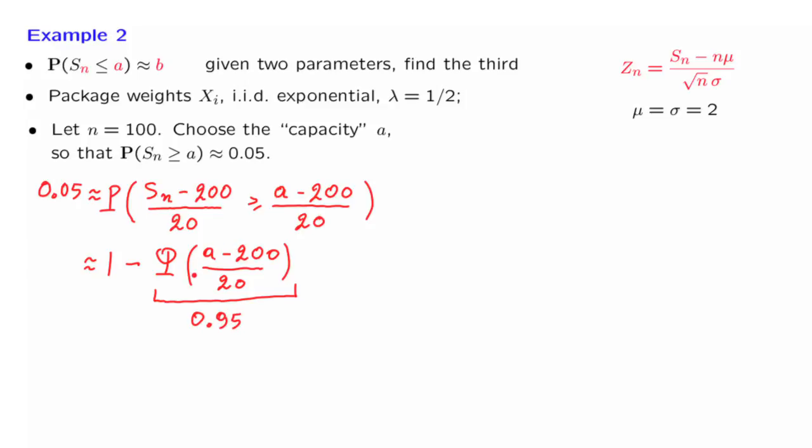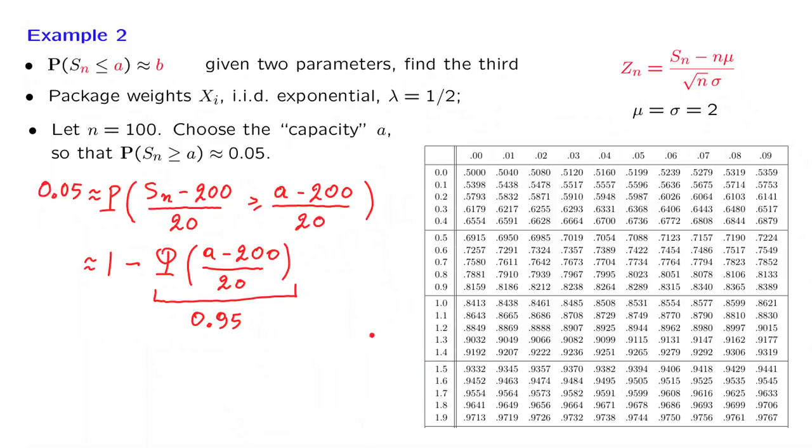What does this tell us about the argument of the CDF? We can look at the table and try to find somewhere an entry of 0.95. And we find it either here or there. We could choose either one, or we might decide to split the difference and say that we get a value of 0.95 when the argument is 1.645.